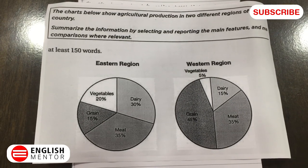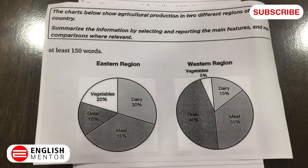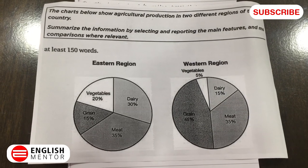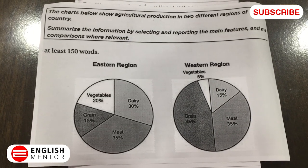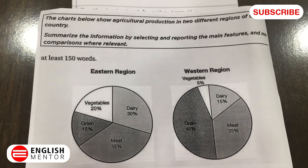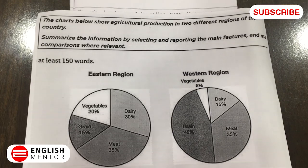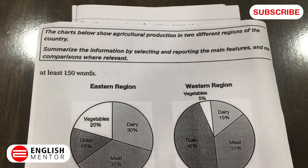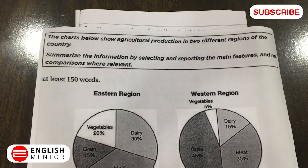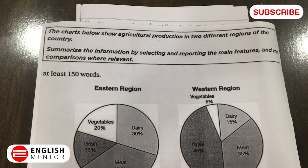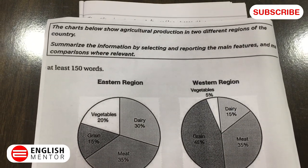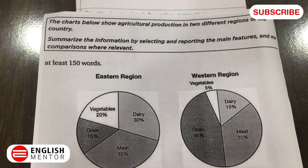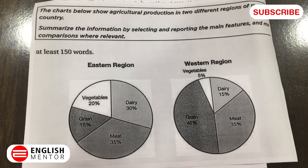Hello everyone. Today we are going to discuss a pie chart for IELTS writing task 1. The first thing to do when we get the question paper is to read the statement. Here we can see that the statement is given and we have been given two pie charts.